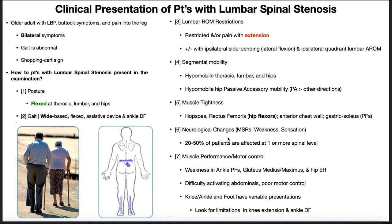There may also be neurological changes — present in only about 20 to 50% of patients with lumbar spinal stenosis at one or more spinal levels — including myotomal weakness, sensory changes, and altered DTRs such as the patellar or Achilles reflex. Patients may also have poor motor control: weakness in ankle plantar flexors and gluteus medius and maximus — because they're constantly bent over and not doing hip extension — and difficulty activating the abdominals, particularly the transverse abdominis.